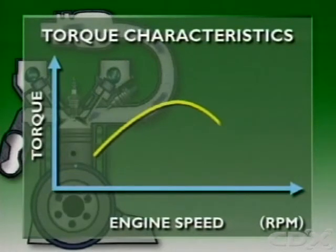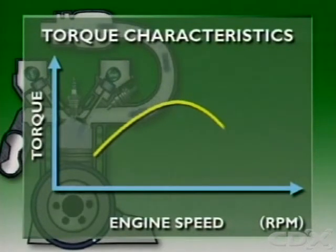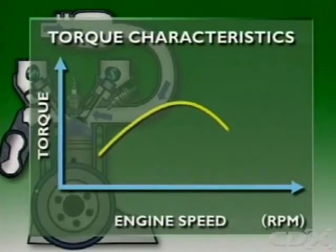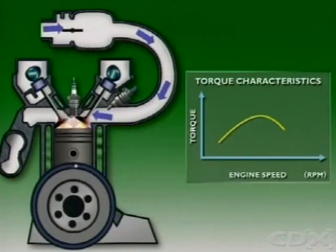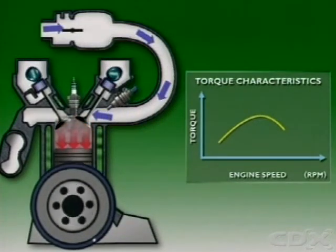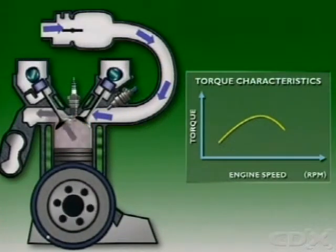The characteristic torque curve of a naturally aspirated engine depends mainly on how the engine's mean pressure changes across the RPM band.